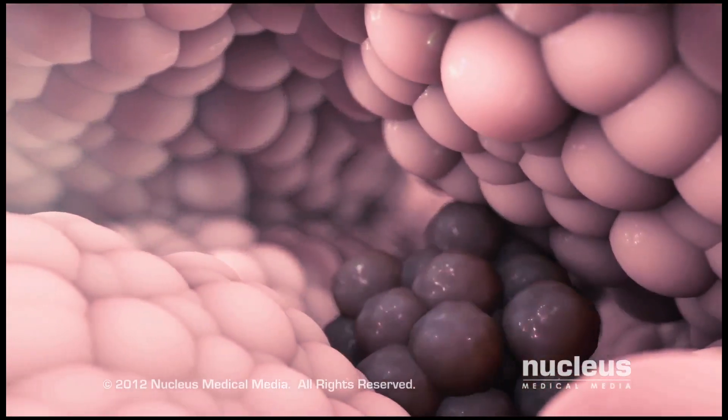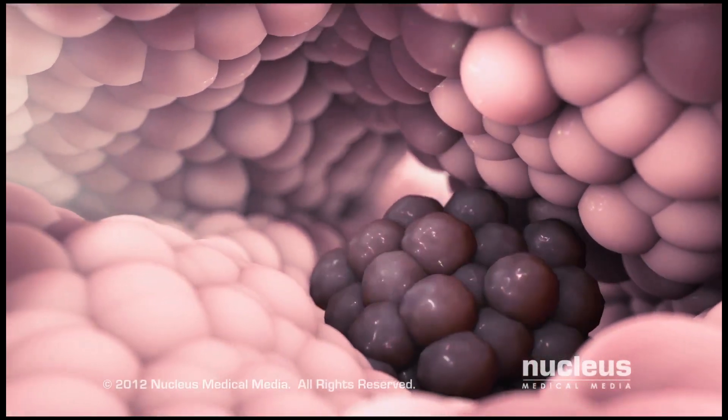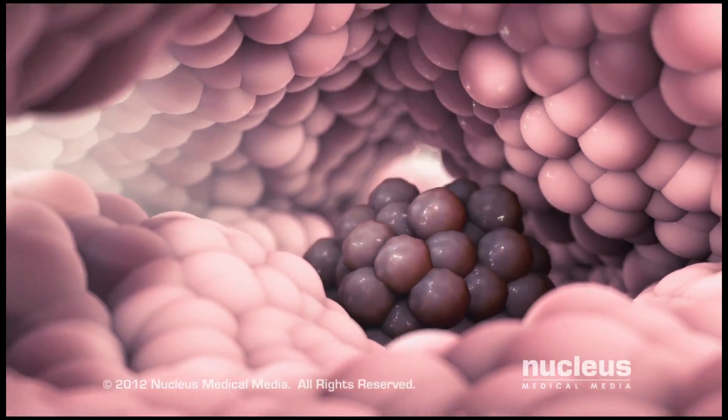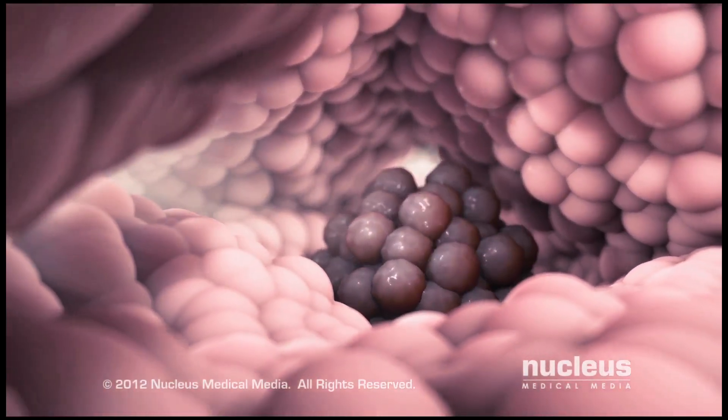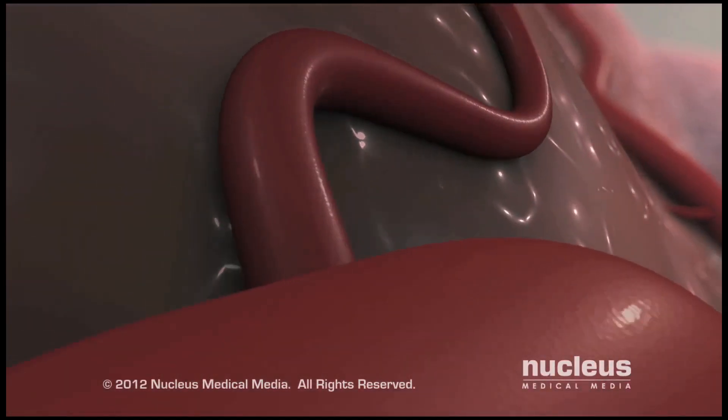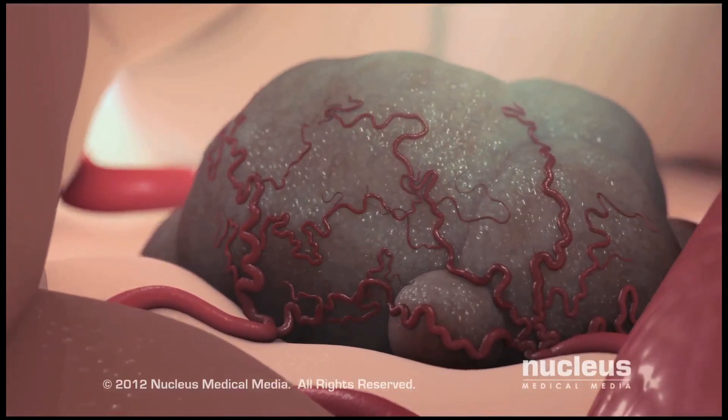A tumor forms as the cancer cells multiply and displace the normal cells. As the tumor enlarges, it develops its own blood supply.